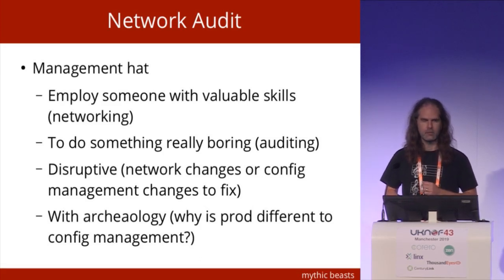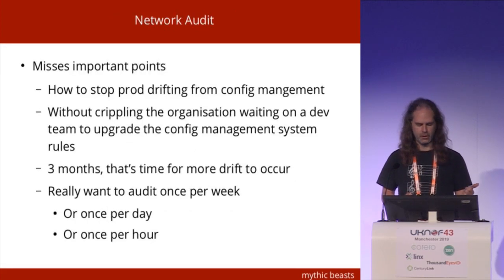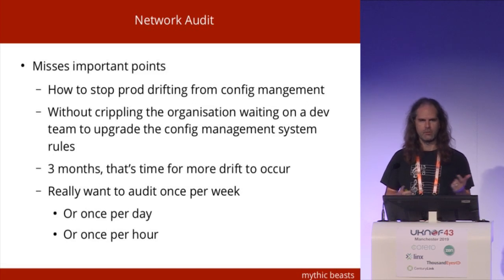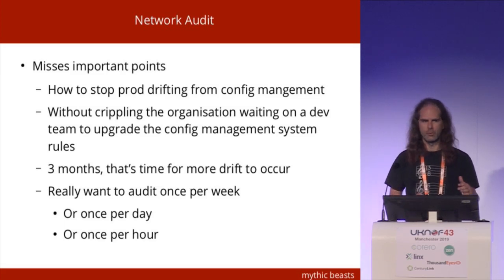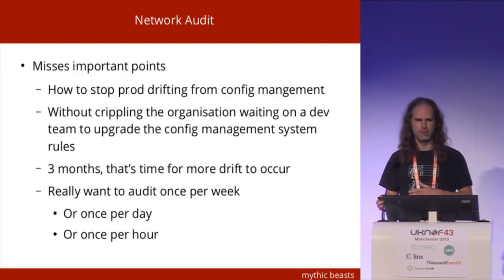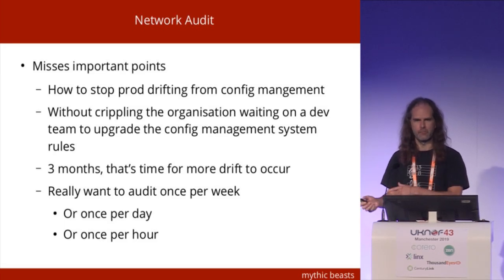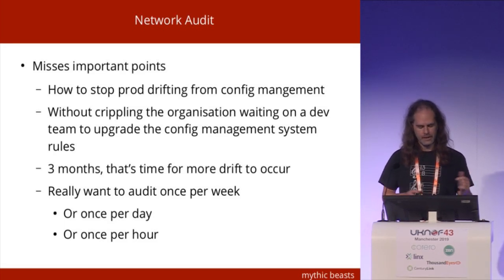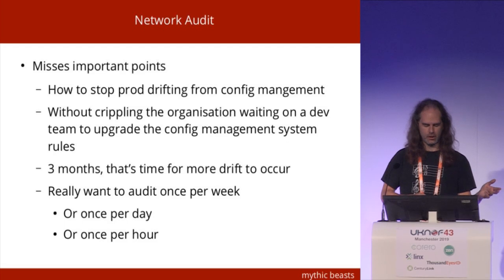There's a bigger problem here, which is: why is production different from what my config management said it should be? And how do I keep them in sync without instituting a blanket rule which says you can't make any change to production unless it's gone through config management — which means when you have an urgent problem, you have to wait for your development team to do a software release before you can fix it. And also, a three-month project — at the end of that three months, your network's probably drifted again, and you've got to go and do it again.